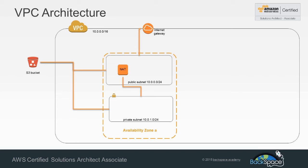The VPC wizard is going to create those public and private subnets, a NAT instance, and an internet gateway for connection to the internet. It will also create VPC endpoints for us to connect directly from our VPC to an S3 bucket without having to go through the internet gateway — this is a new feature of VPC and it saves a little time as well.